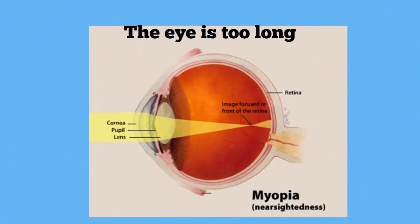Because of this extra length, light must travel farther to reach the retina. Distance objects do not focus sharply on the retina. Instead, the lens of the eye makes the image come into focus at a point in front of the retina.